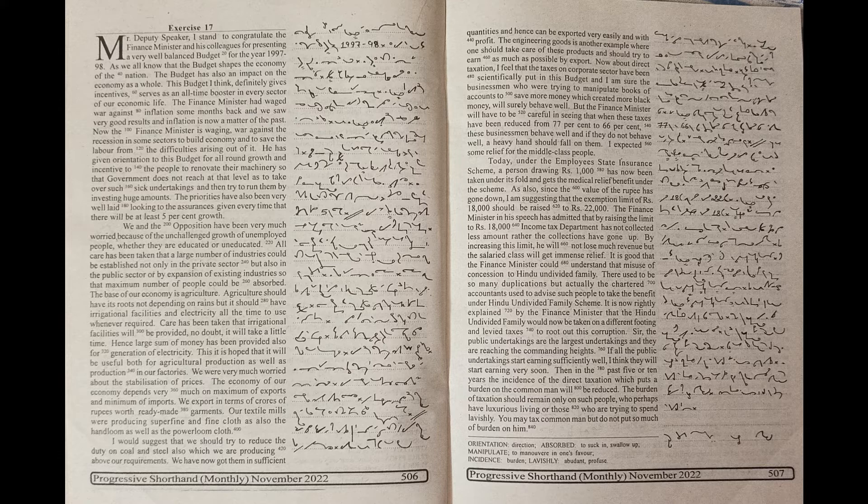The base of our economy is agriculture. Agriculture should have its roots not depending on rains but it should have irrigational facilities and electricity all the time to use whenever required. Care has been taken that irrigational facilities will be provided. No doubt it will take a little time. Hence, large sum of money has been provided also for generation of electricity. This it is hoped that it will be useful both for agricultural production as well as production in our factories.